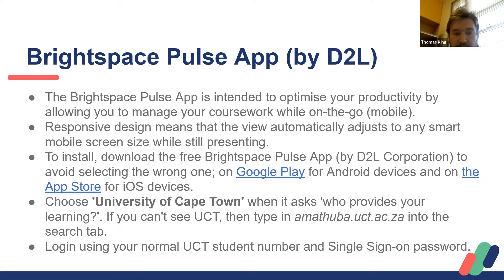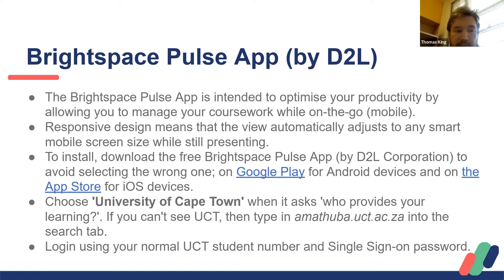It's a free app. You can download it from Android Google Play or the App Store. It should pick up your location when you download as University of Cape Town, if you're using the ZA to get the UCT version. Like with the platform itself, use normal single sign-on and password to access.